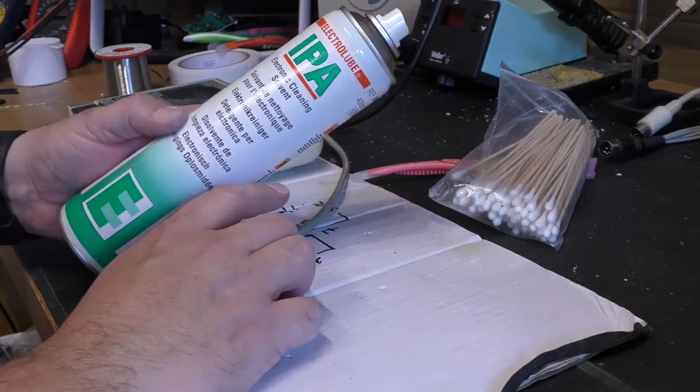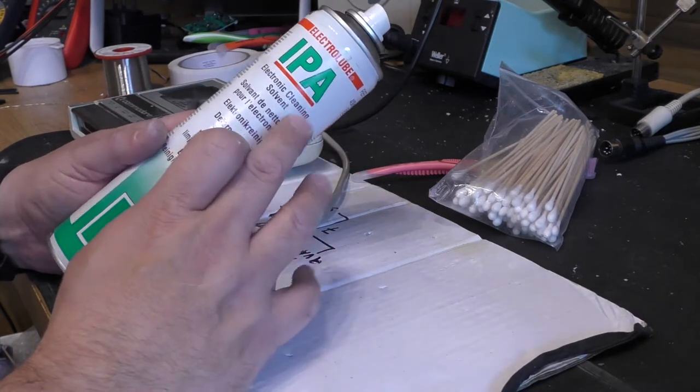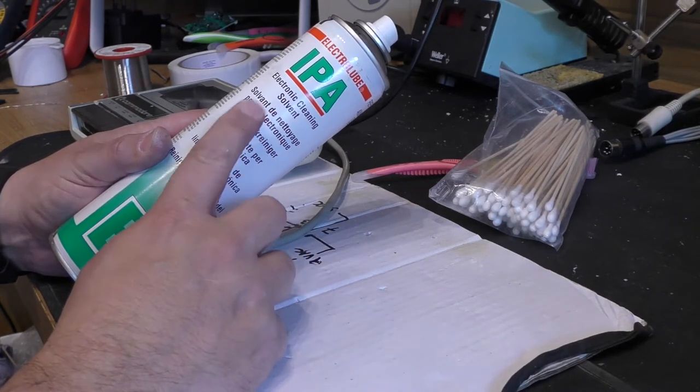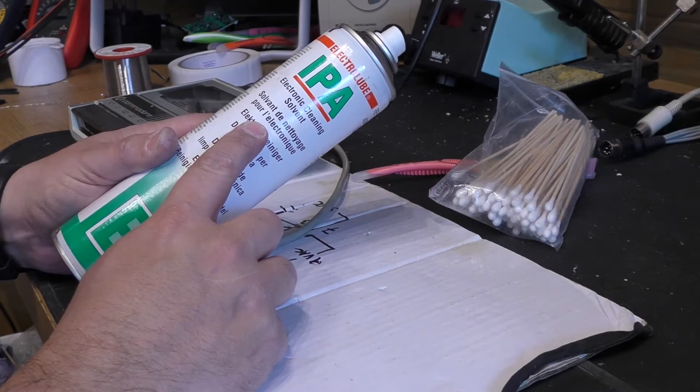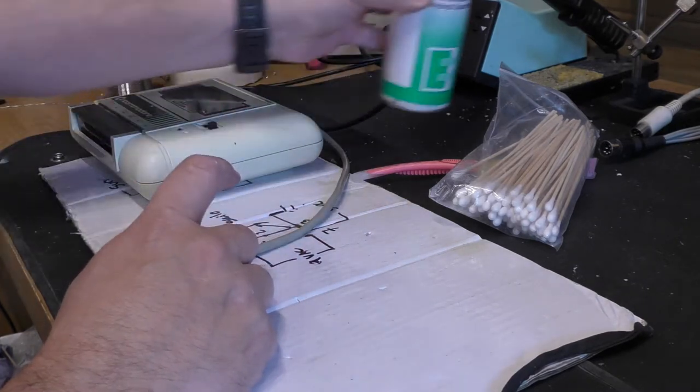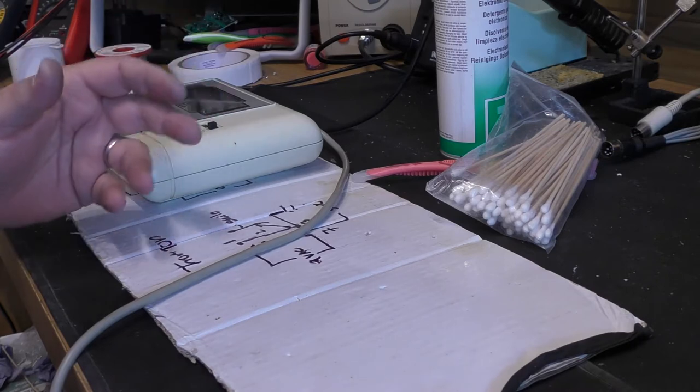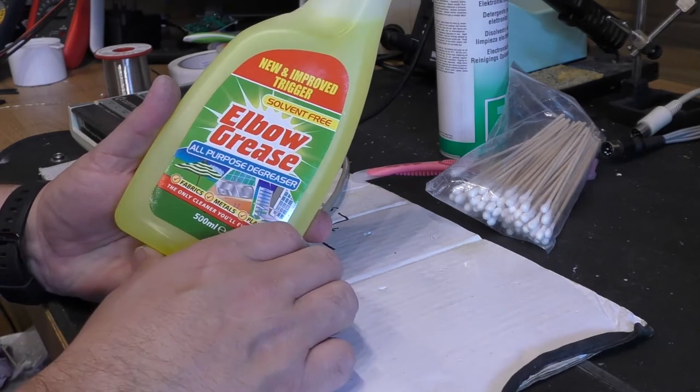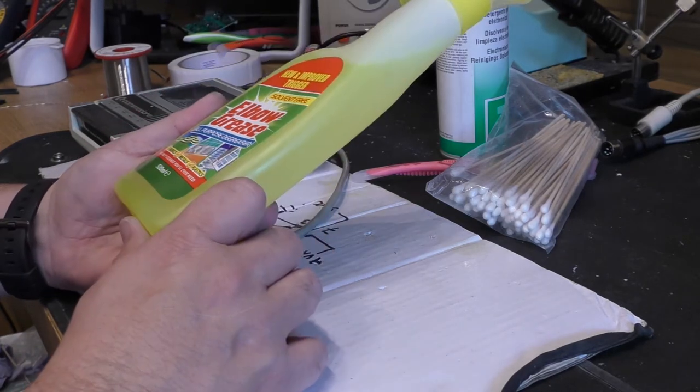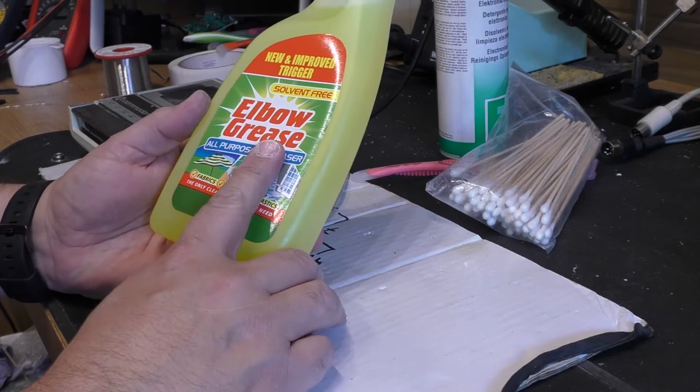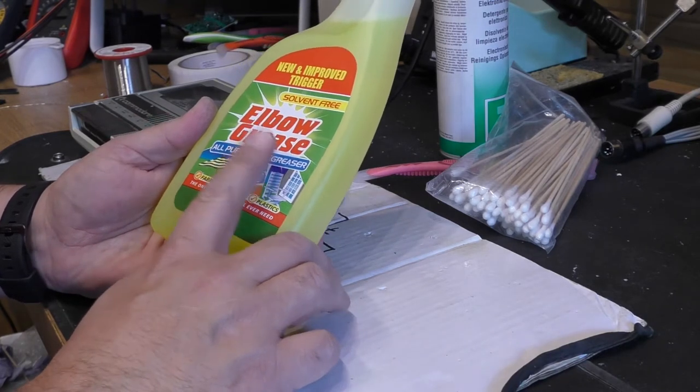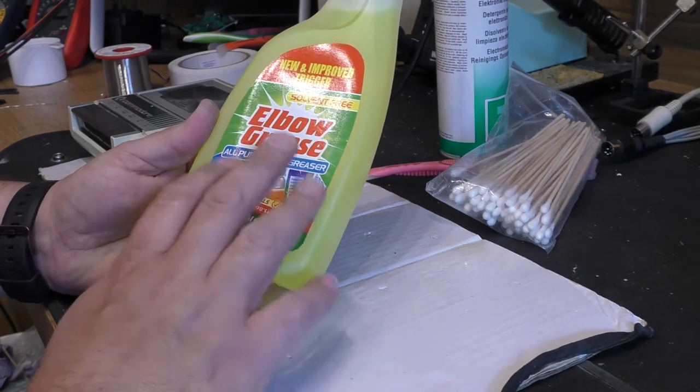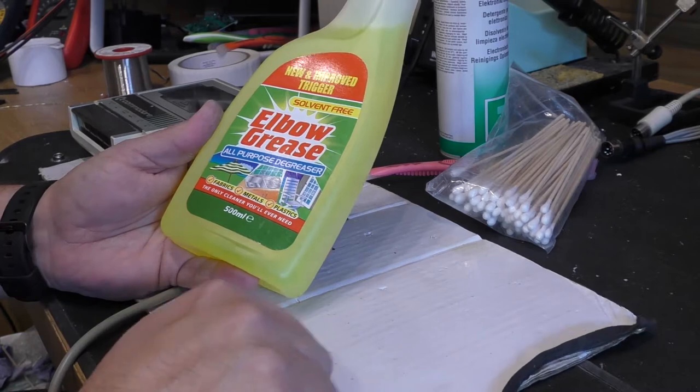Now this is quite important. It's isopropyl alcohol. It actually removes all of the rubbish that comes off the tapes and accumulates on the head, all the magnetic stuff. That's quite important to get rid of. And to clean the case up, I've been using a foam cleaner, but somebody sort of led me onto this stuff, which is called elbow grease. And it's brilliant. It's really, really good. You can get it from the range and I think Poundland do it as well. This stuff's really good for cleaning up these cases, as I'll show you.